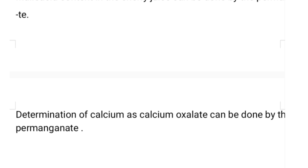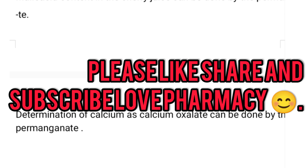Applications of permanganometry: it is used in the assay of hydrogen peroxide, determination of nitrates and perchlorates, detecting whether a sample contains nitrates or perchlorates, determination of malic acid content in cherry juice, and determination of calcium as calcium oxalate. Please comment if you have any doubts and like my channel.